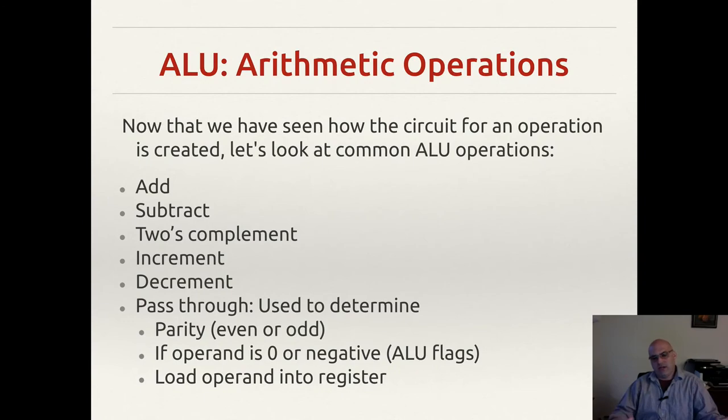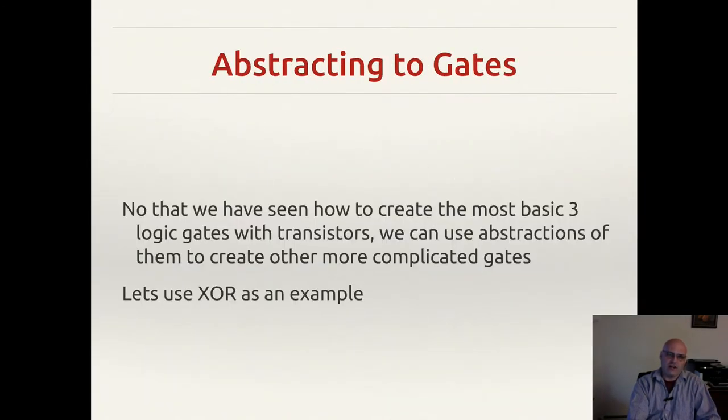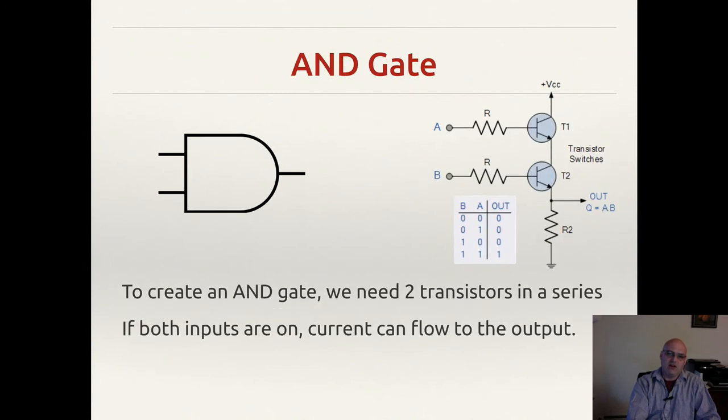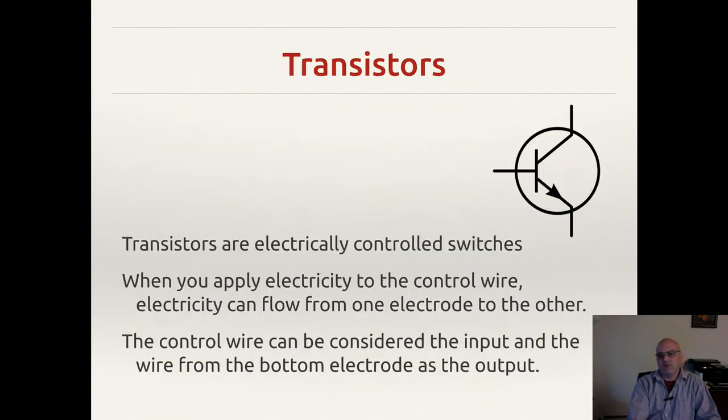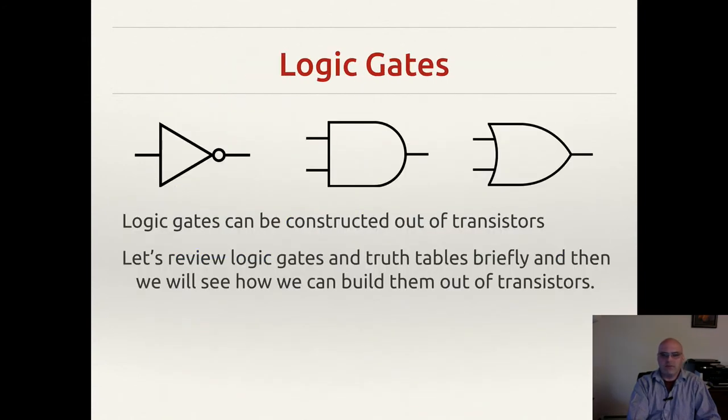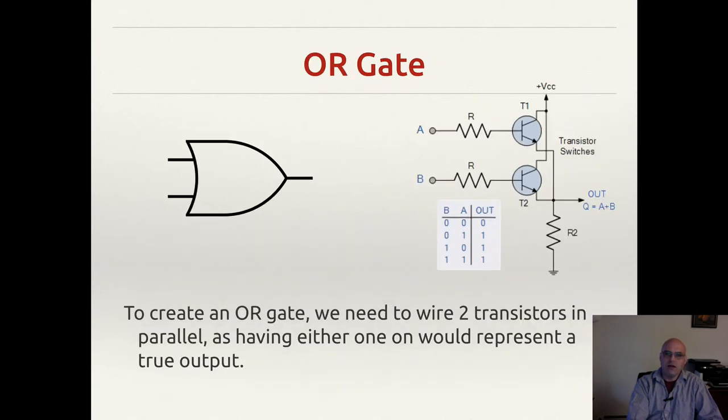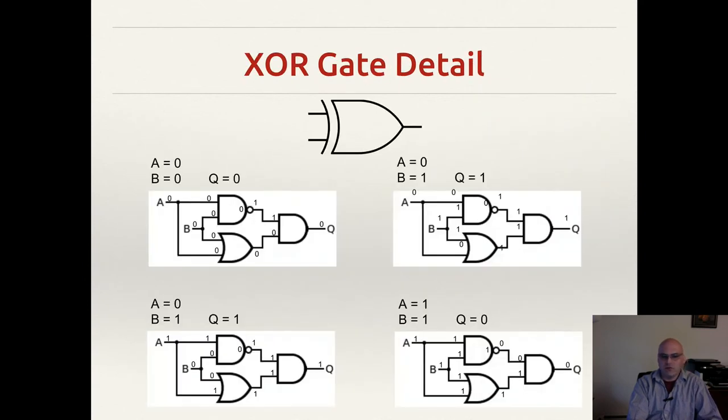So now you've seen how to create an actual adder. And if we go back here, abstraction-wise, just to get a grasp on this, we started with just a transistor. So we started there, and we worked our way up to gates. So we know the NOT had one transistor, the AND and the OR had two.